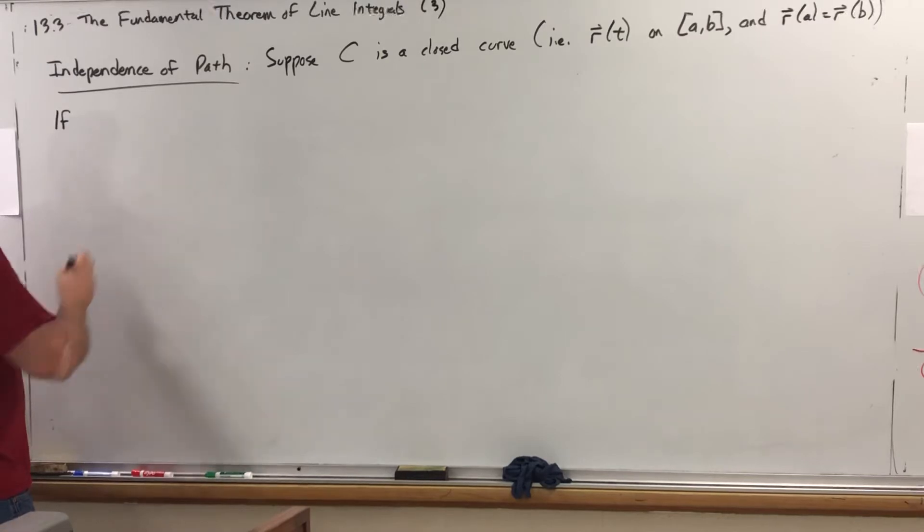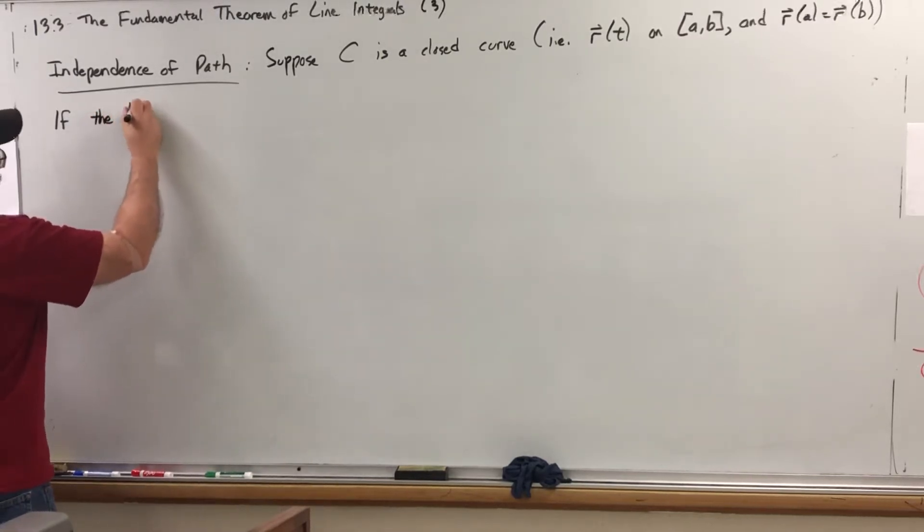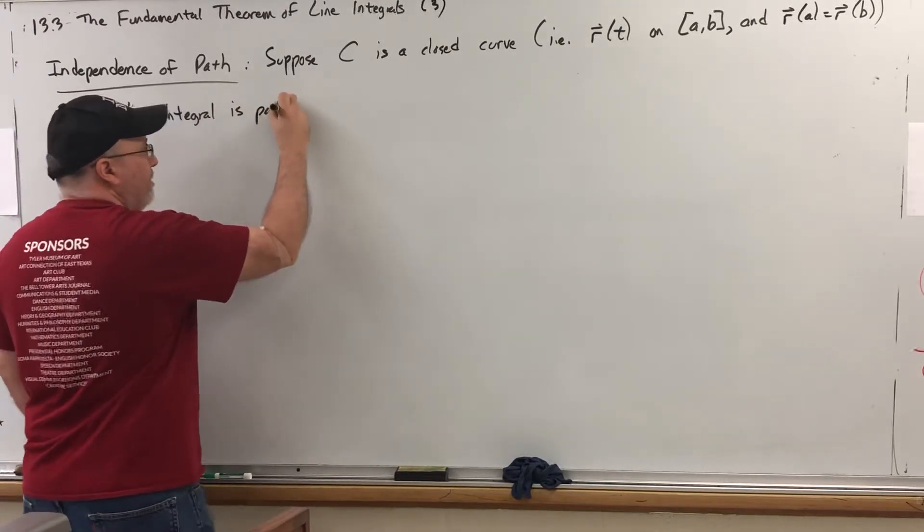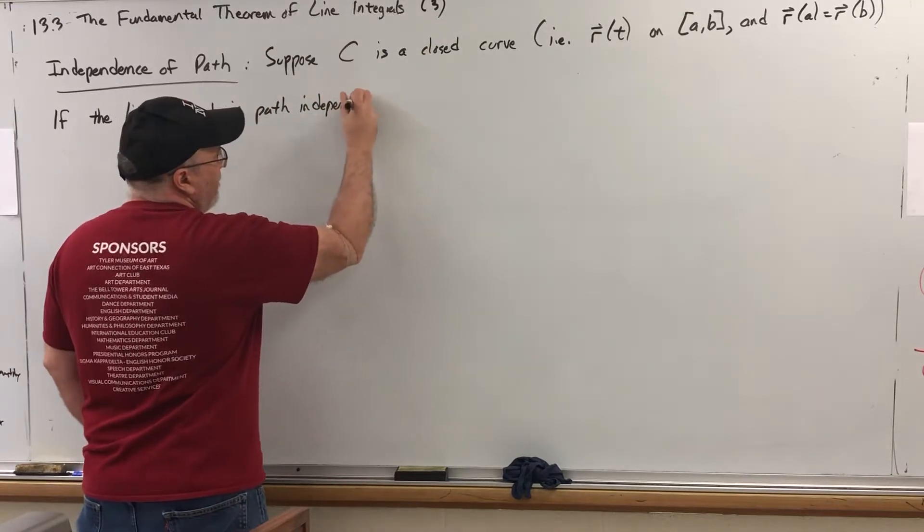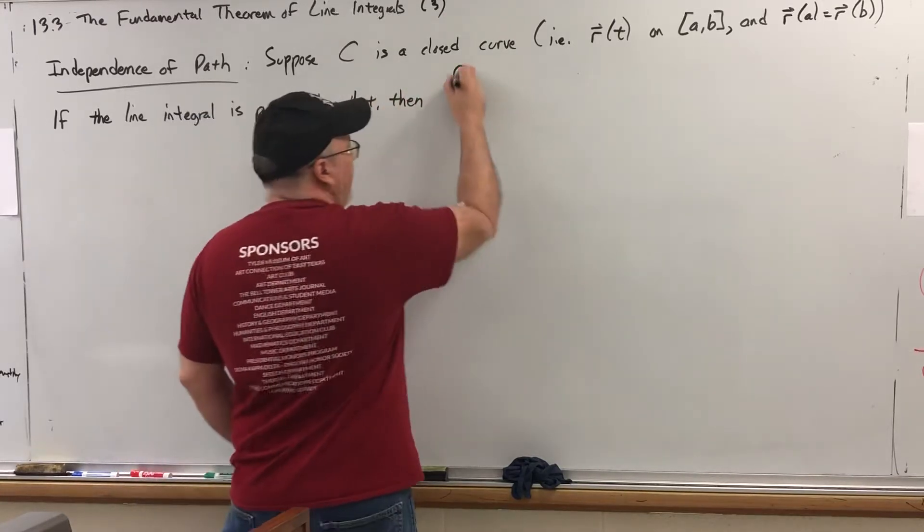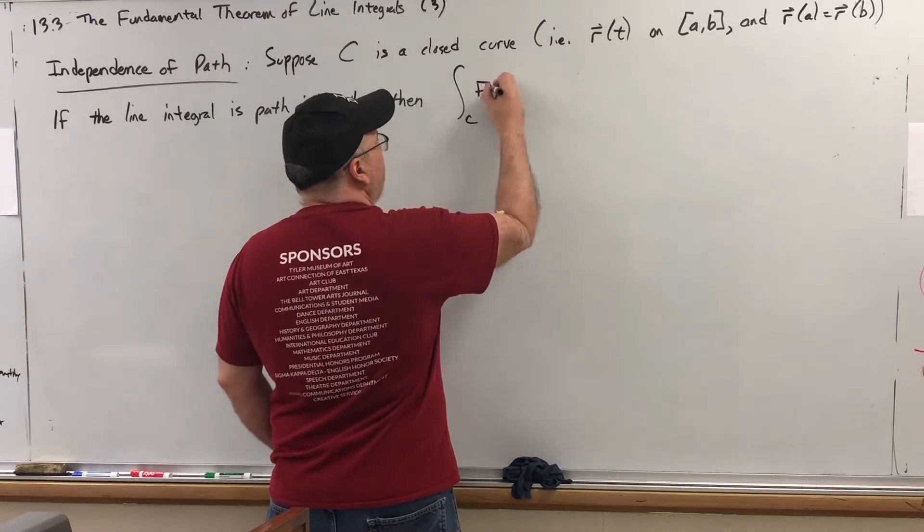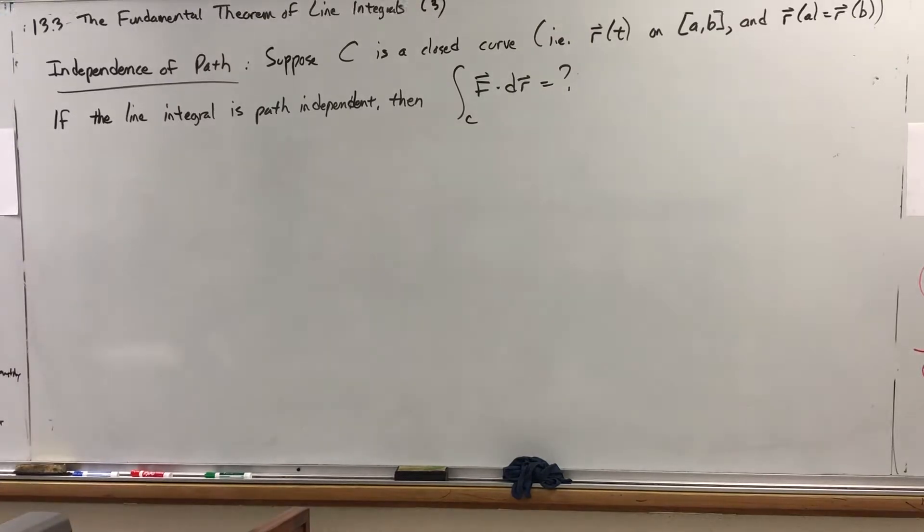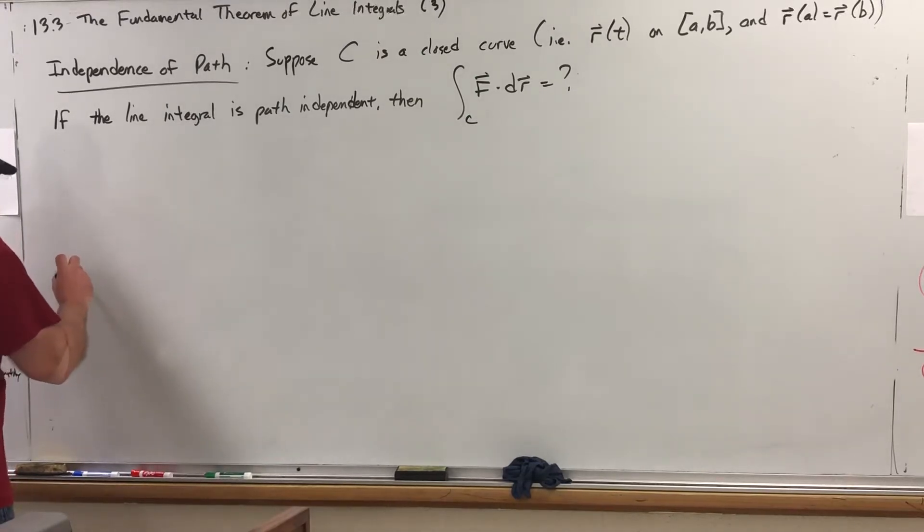If the line integral is path independent, then, what do you think the line integral over that closed curve would equal? It may not be intuitive, but let's see if we can figure it out. So, let's take some curve C. We'll just make it nice and simple. So, R of A is equal to R of B. Okay?